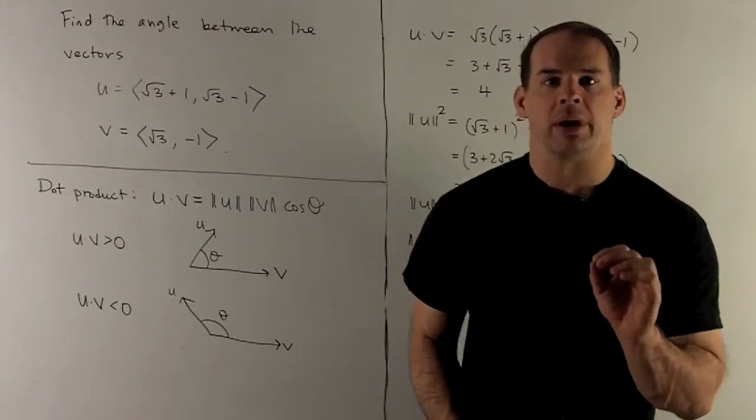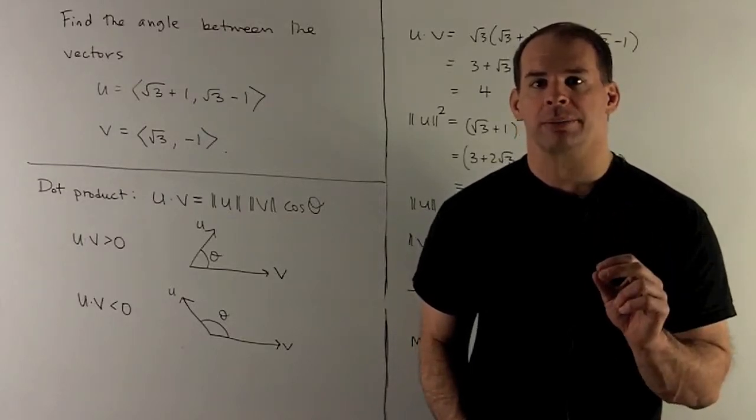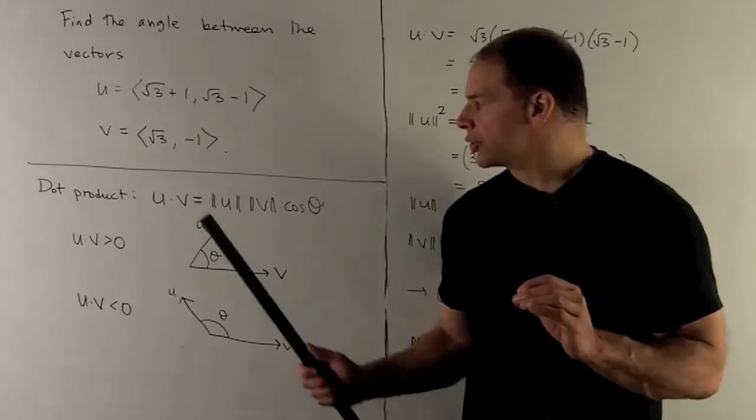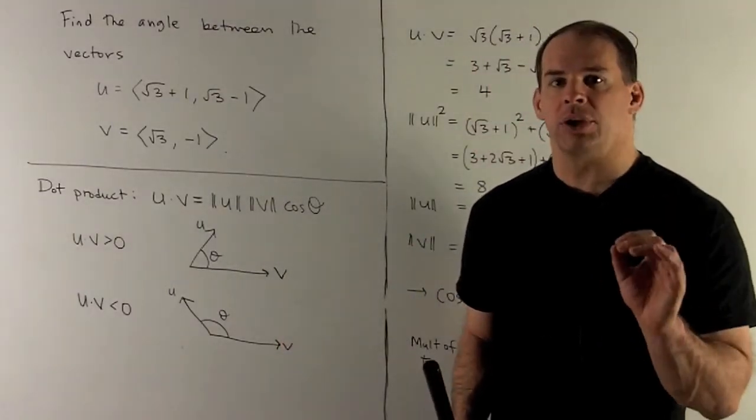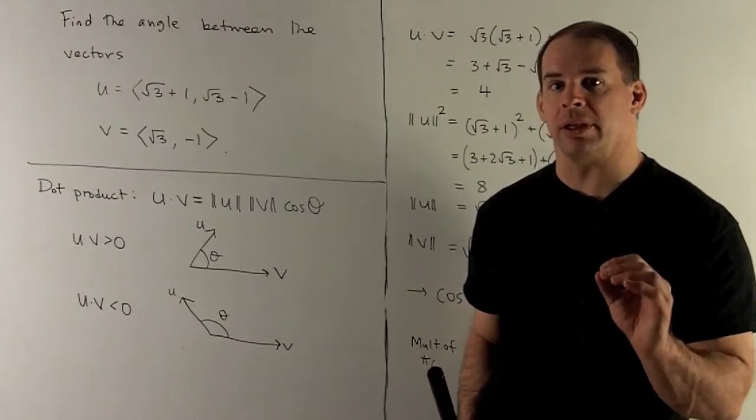What we'll do here is compare two definitions of the dot product. The first one, this is the geometry: u·v equals the length of u times the length of v times the cosine of the angle between them.